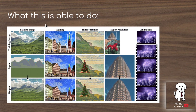Some interesting applications of this are paint-to-image, editing, harmonization, super-resolution, and animation. Paint-to-image is the idea of having a rough sketch that captures the global structure of the image you want to generate, and then doing a semantic-style transfer — similar to NVIDIA's GauGAN model — in order to go from the painted image to a photorealistic image that resembles the training image this model was trained on.